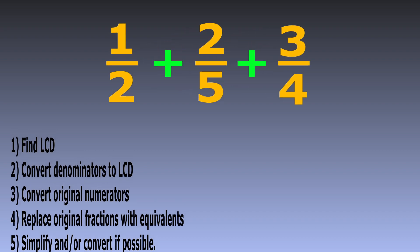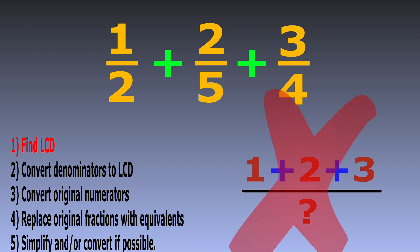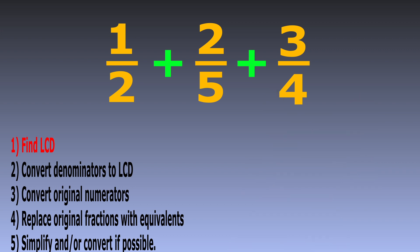Here's our problem: 1 over 2 plus 2 over 5 plus 3 over 4. Notice these are unlike fractions in that all of the denominators are different. Since our denominators are not the same, these are not similar fractions, so simply adding the numerators will not help us.